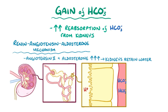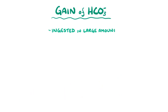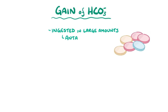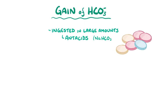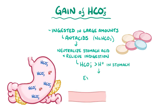In other cases, excess bicarbonate ions don't come from within our bodies at all, but are ingested in large amounts, usually in the form of antacids like sodium bicarbonate. These are typically used to neutralize stomach acid and relieve indigestion. Excess use of antacids, though, can result in more bicarbonate ions than hydrogen ions in the stomach, and the excess bicarbonate ions can get absorbed into the blood. All these processes have a net result of increasing the bicarbonate ion concentration in the blood, which increases blood pH.